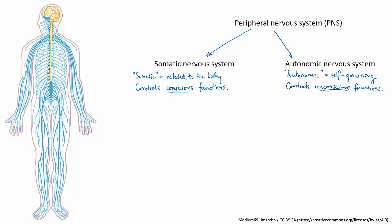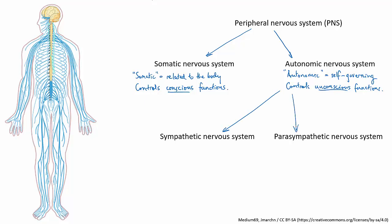We also find that the autonomic nervous system is divided into two further subsystems, known as the sympathetic and parasympathetic systems. Essentially, the sympathetic nervous system looks after all the functions that get the body ready for activity or to respond to a threat or an opportunity. The parasympathetic nervous system, on the other hand, is kind of the opposite — it helps you relax and chill out.